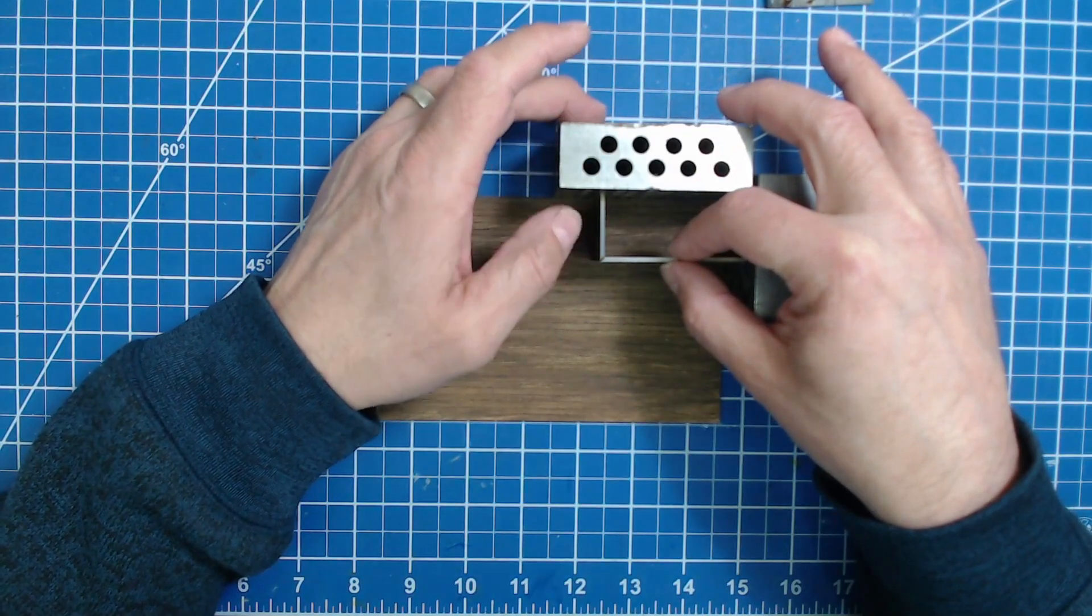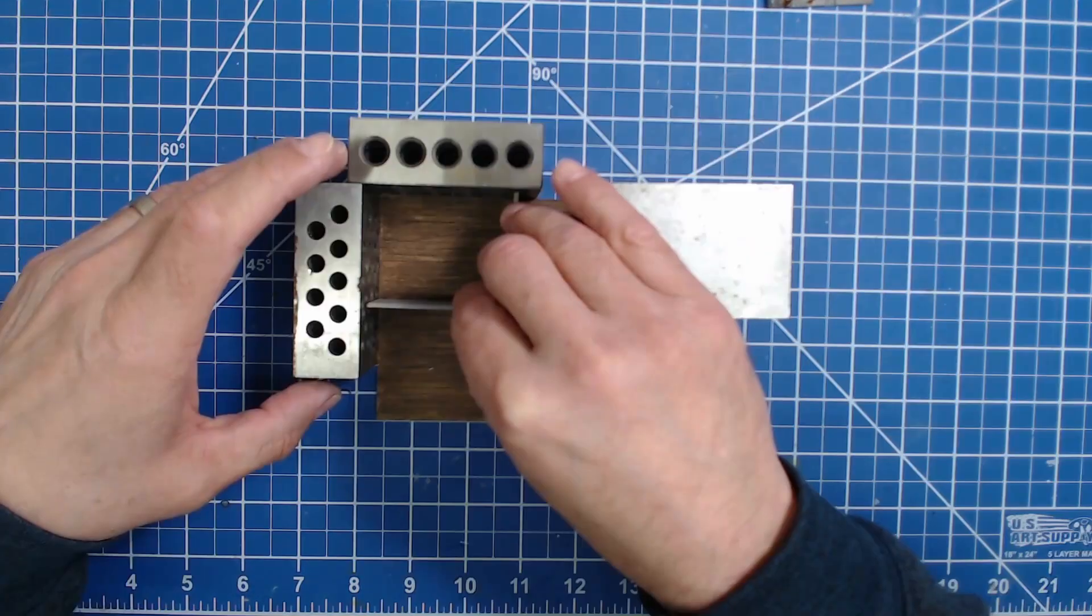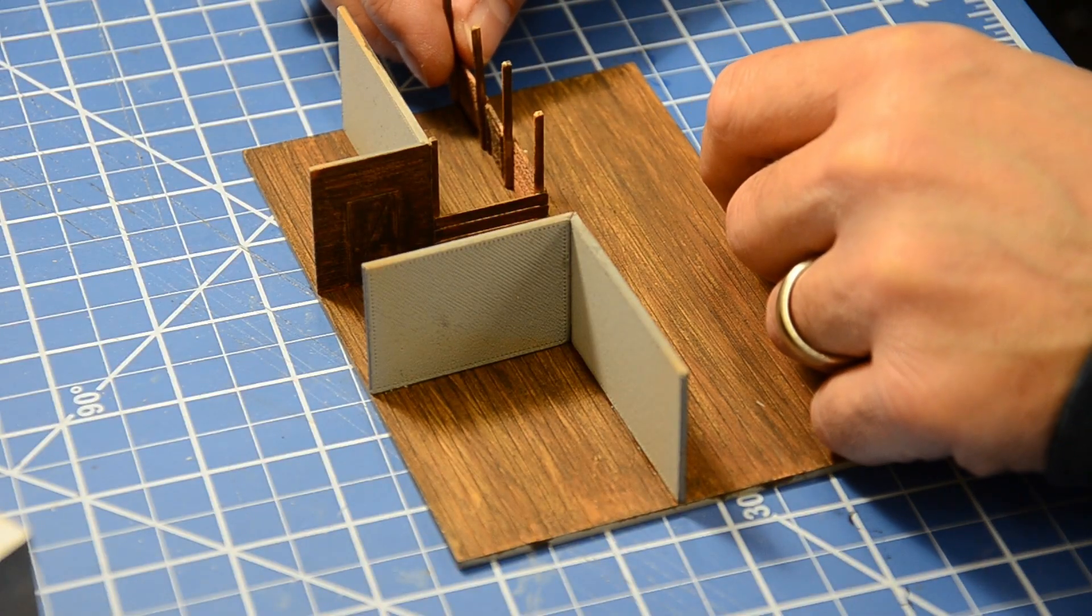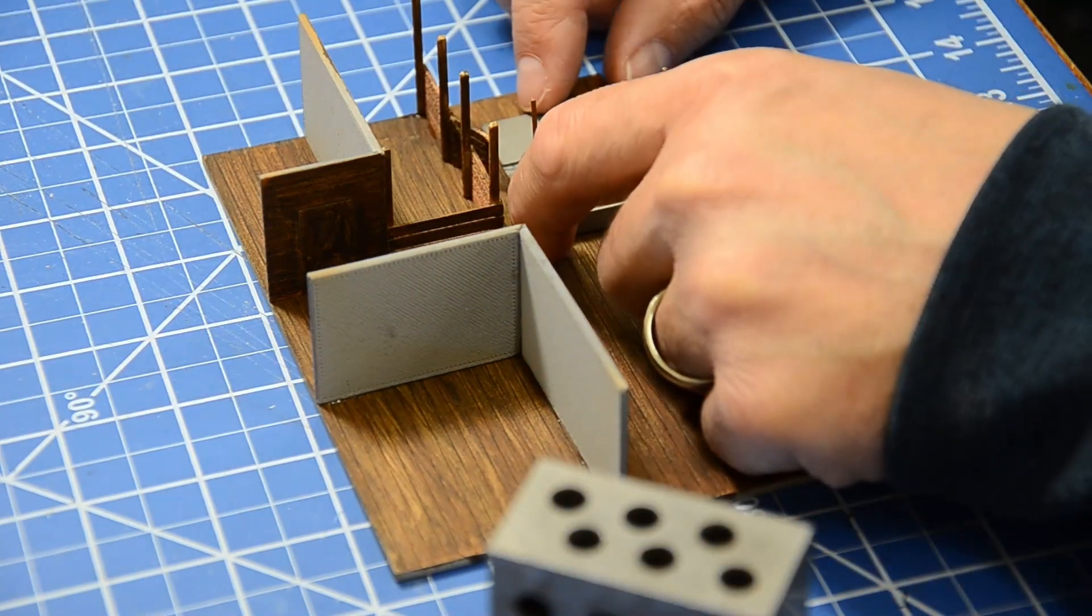Assembling the interior was next. The tool and tack room was glued to the floor, then the feed room. Next was the box pen. After that, the cattle stalls were installed.